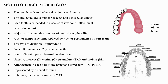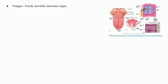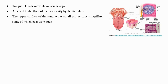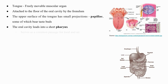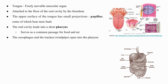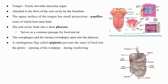In humans, the dental formula is 2-1-2-3 in each jaw. The tongue is a freely movable muscular organ attached to the floor of the oral cavity by the frenulum. The upper surface of the tongue has small projections called papillae, some of which bear taste buds. The oral cavity leads into a short pharynx, which serves as a common passage for food and air. The esophagus and the trachea (windpipe) open into the pharynx.